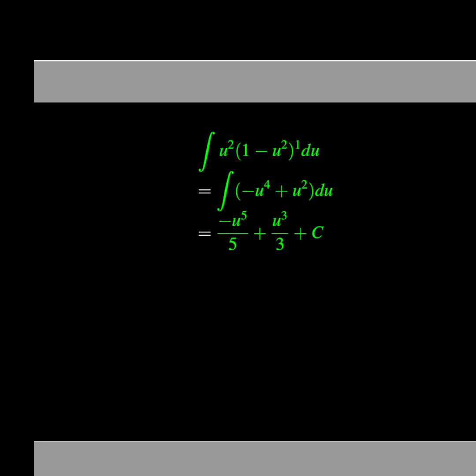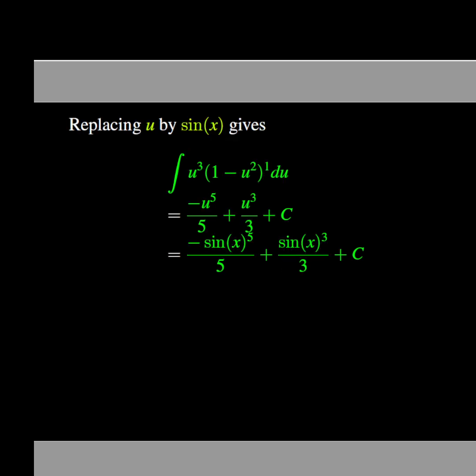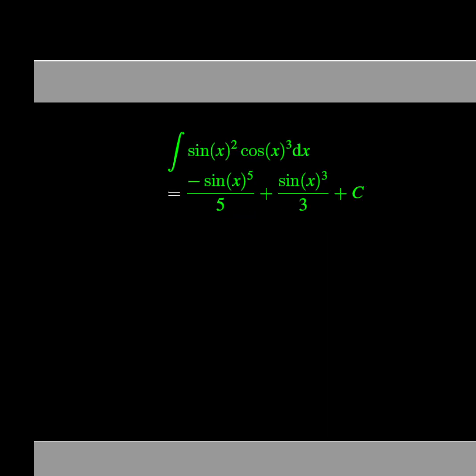When we expand the expression, we obtain the integral of negative u to the power 4 plus u squared du, which is equal to negative u to the power 5 over 5 plus u cubed over 3 plus C. Therefore, the integral of sine of x to the power 2 times cosine of x to the power 3 dx is equal to negative sine of x to the power 5 over 5 plus sine of x cubed over 3 plus C. This completes the solution.